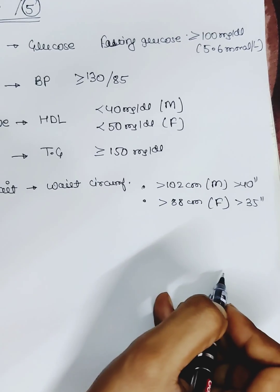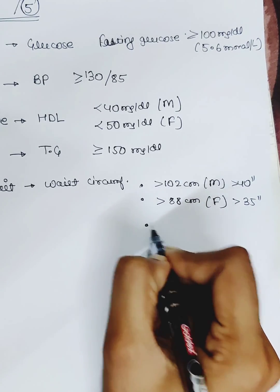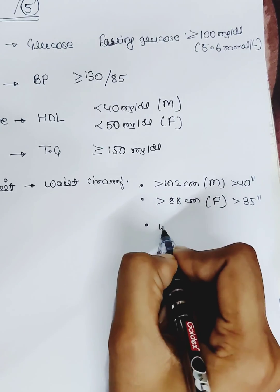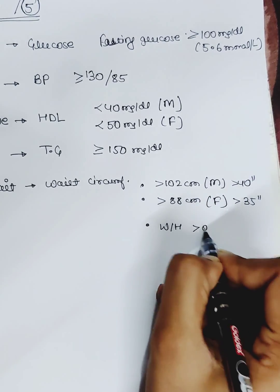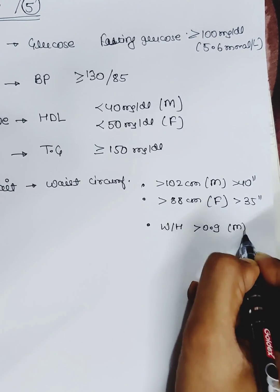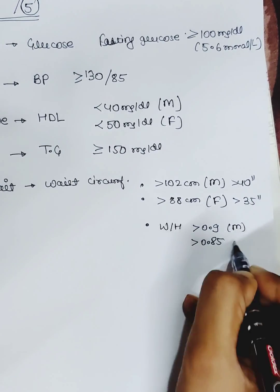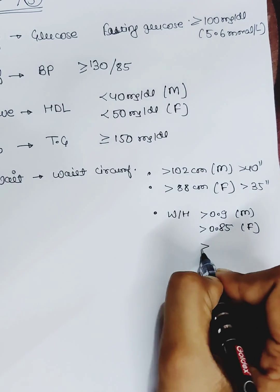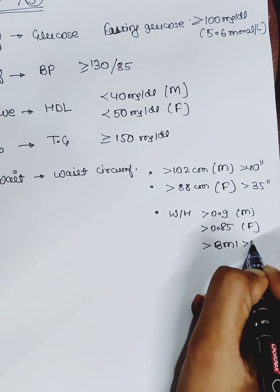Another reliable criteria for obesity accepted by WHO is waist-to-hip ratio, which is more than 0.9 for males and more than 0.85 for females, or BMI more than 30.